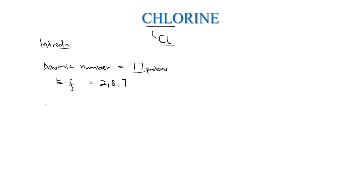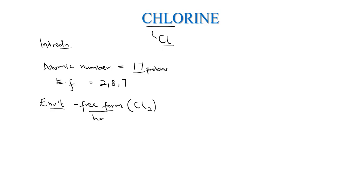When you look at chlorine in the environment, it's quite hard to find it in free form. Free form means chlorine not combined with anything. In free form it's very hard to find chlorine. Chlorine is a diatomic element, meaning it occurs in pairs. However, in free form it's quite hard to find, and in most cases we shall find it in combined form with other elements.